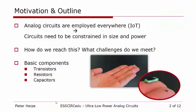Let me start with a brief motivation — why do we need low-power analog circuits. As you know, analog circuits are used more and more, for example in Internet of Things applications. When you need so many circuits for these applications, it becomes more and more important that the size and the power consumption are constrained. And that's one of the reasons why we need ultra-low-power circuits.